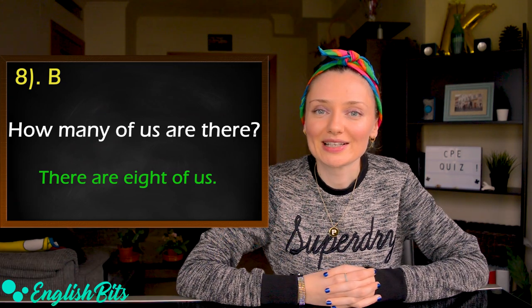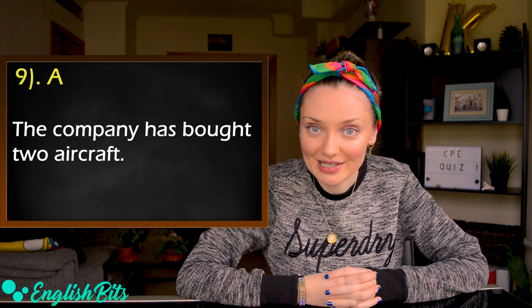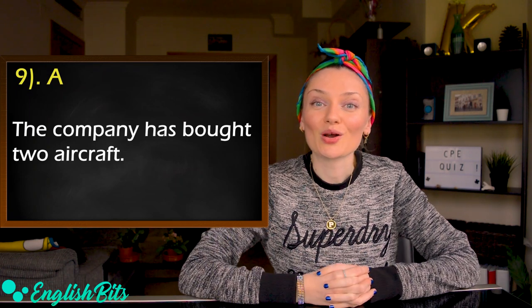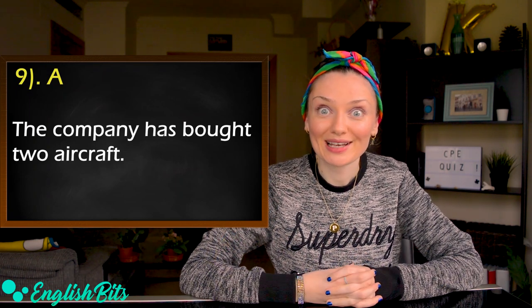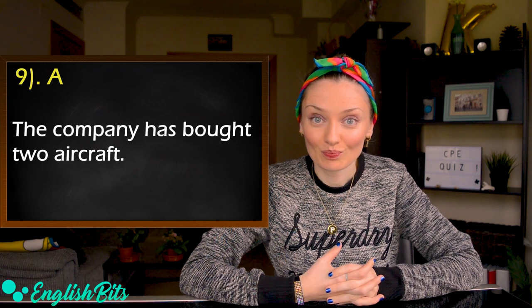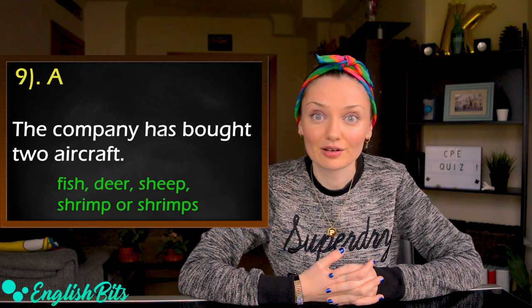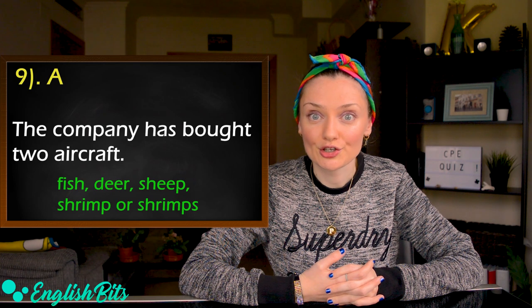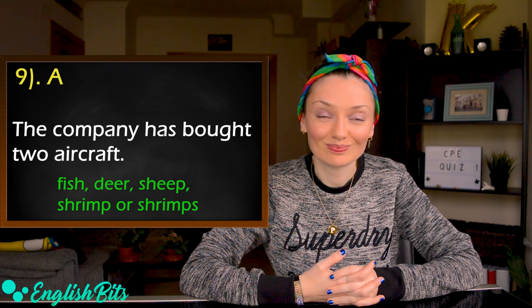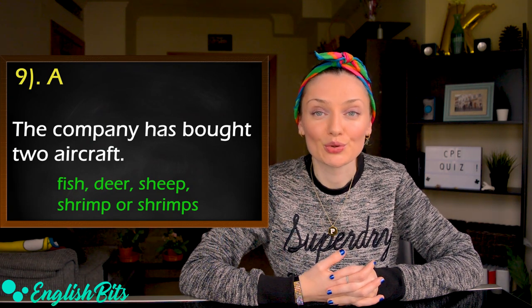Number nine — the correct answer is A: The company has bought two aircraft. Aircraft is an irregular plural — one aircraft and two aircraft; we don't add an S. The same happens with other nouns like fish (one fish, two fish), deer (one deer, two deer), sheep (one sheep, two sheep), and shrimp (one shrimp, two shrimp).